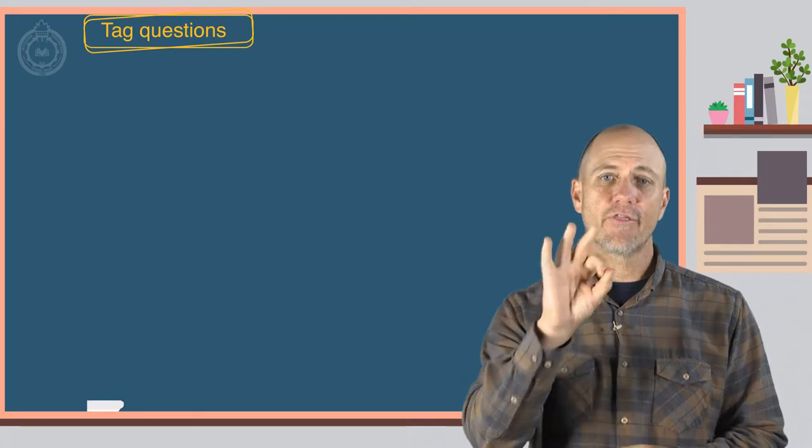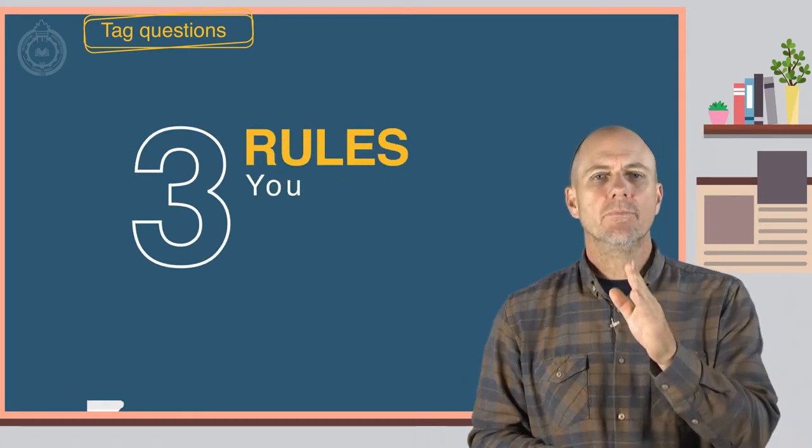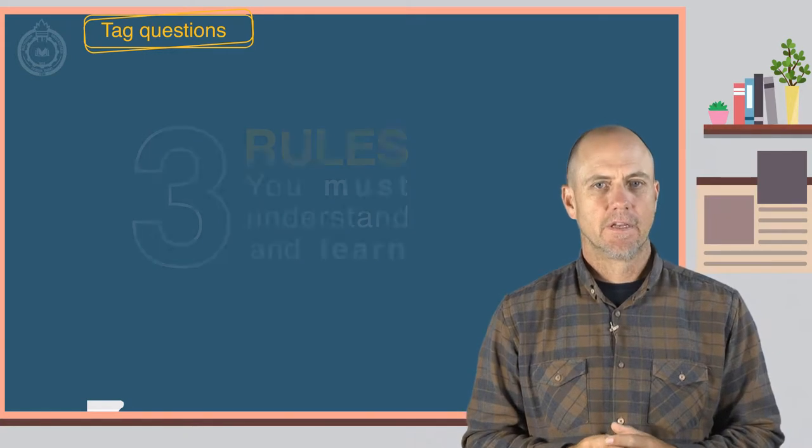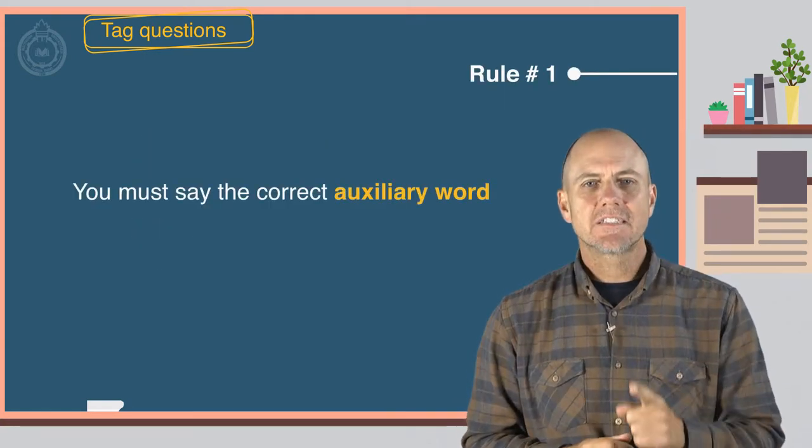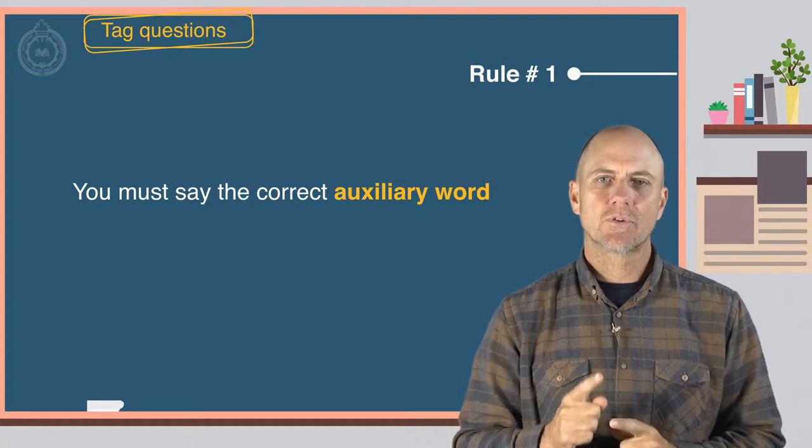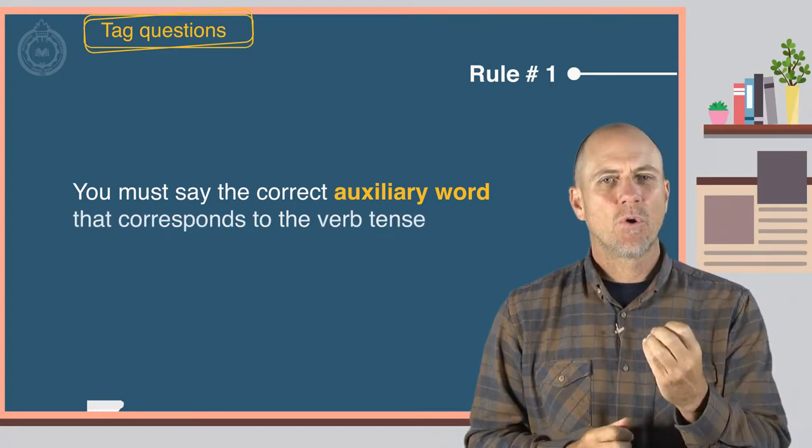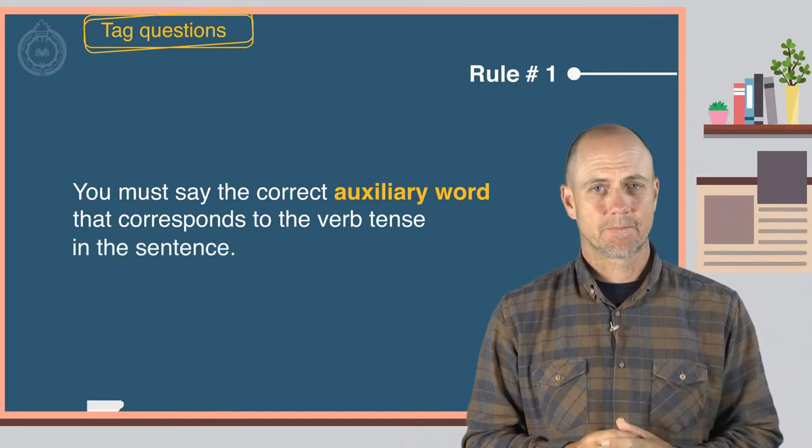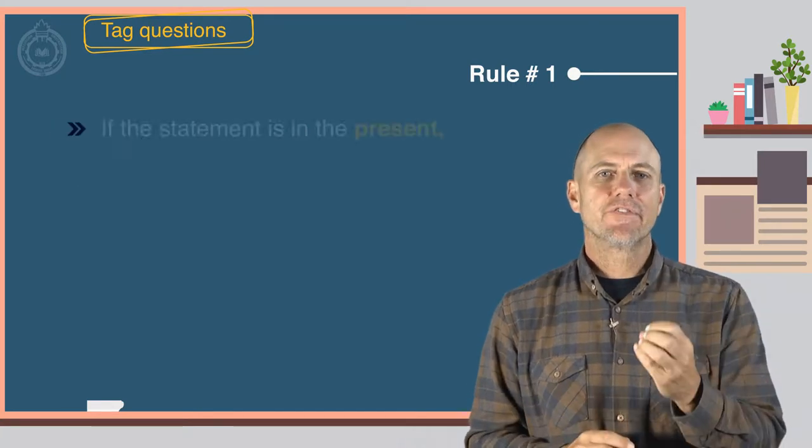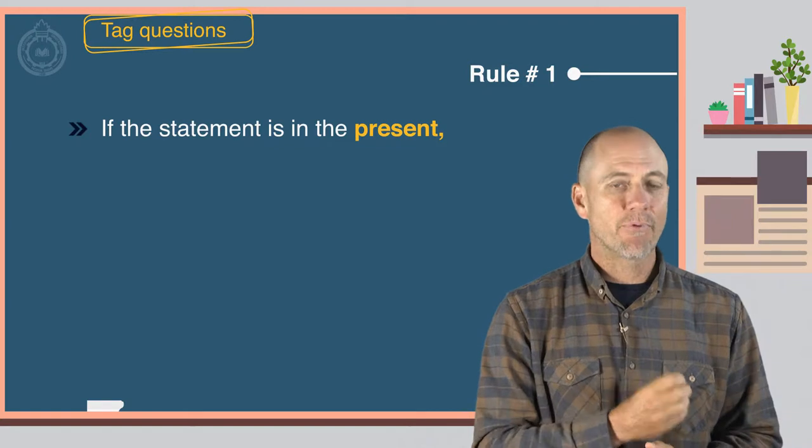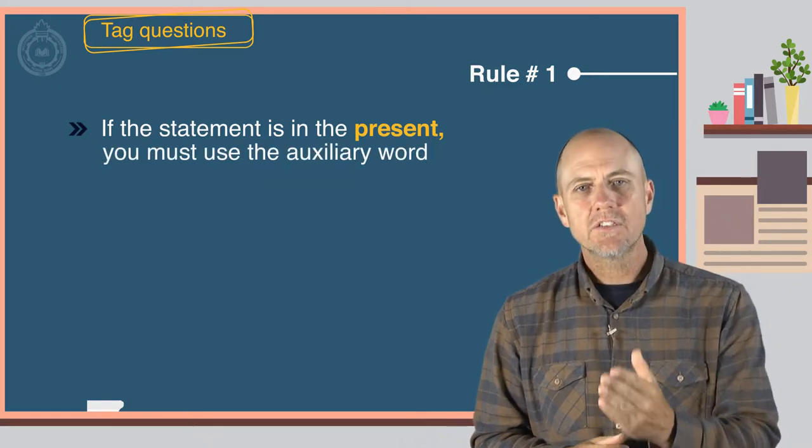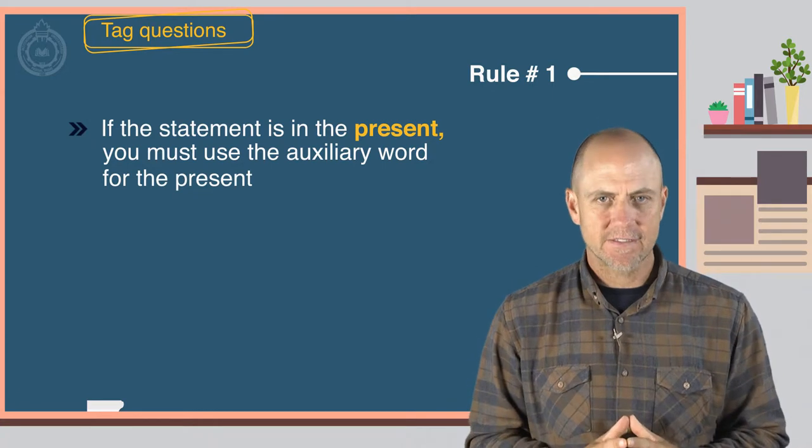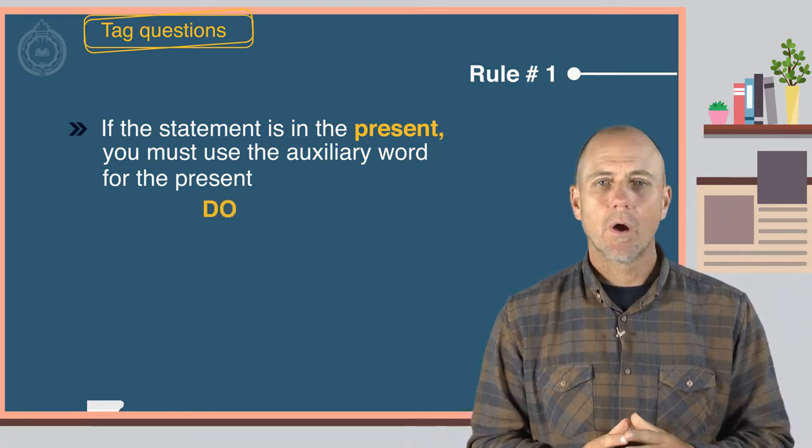There are three rules you must understand and learn. First, you must say the correct auxiliary word that corresponds to the verb tense in the sentence. In other words, if the statement is in the present, you must use the auxiliary words for the present, do or does.